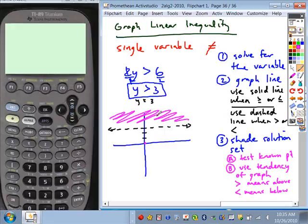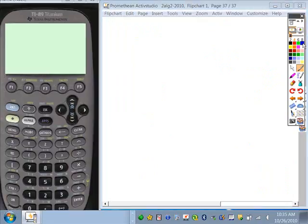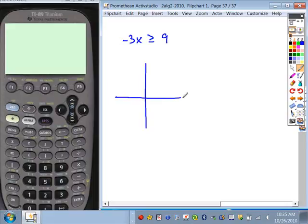There's another single variable inequality to pay attention to. And that's if you're given x. So here we have -3x is greater than or equal to 9. If I ask you to sketch this graph, your steps are the same. You're going to solve for your variable. So in solving this we divide both sides by -3.